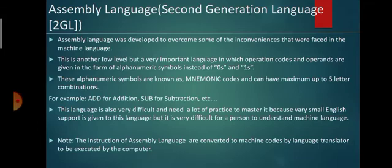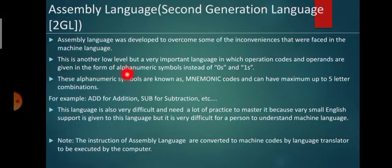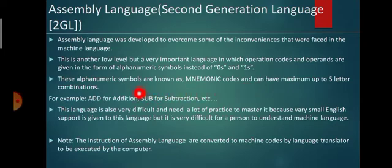Assembly language is another low level but very important language in which operation codes and operands are given in the form of alphanumeric symbols instead of zeros and ones. These alphanumeric symbols are known as mnemonic codes and can have a maximum of up to five letter combinations. For example, ADD for addition, SUB for subtraction, and likewise for other operations.